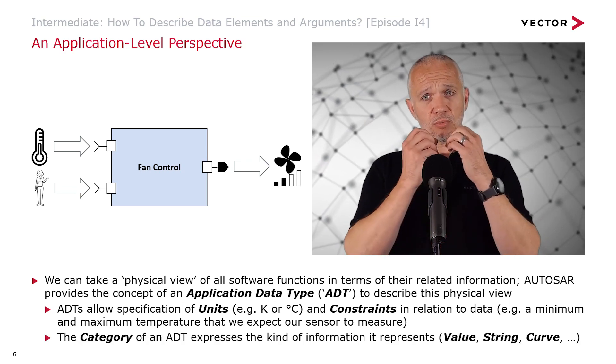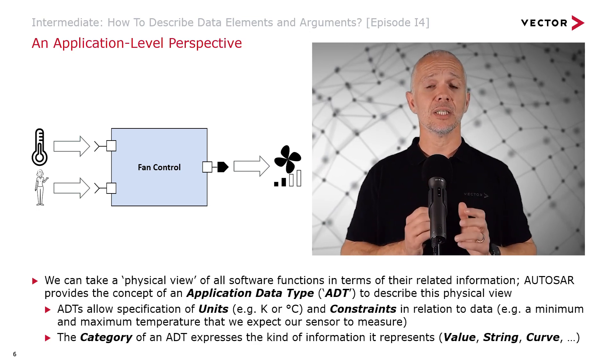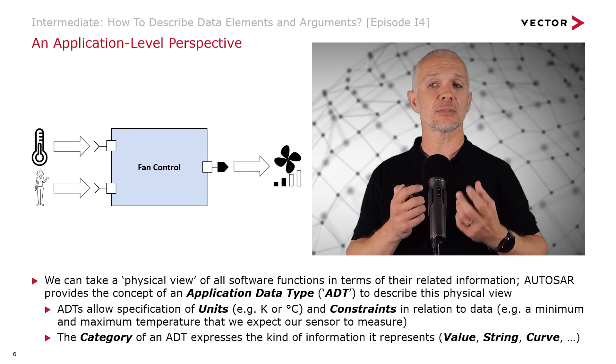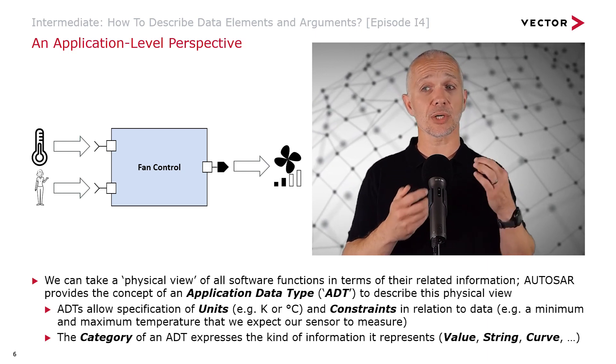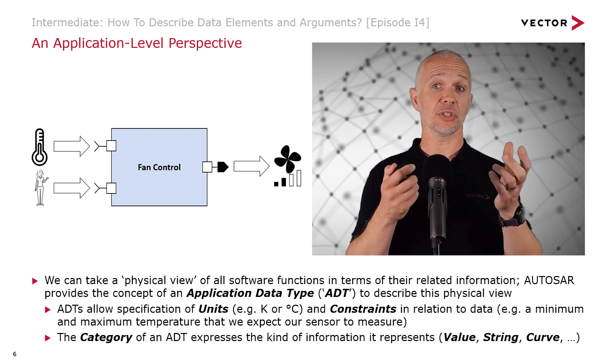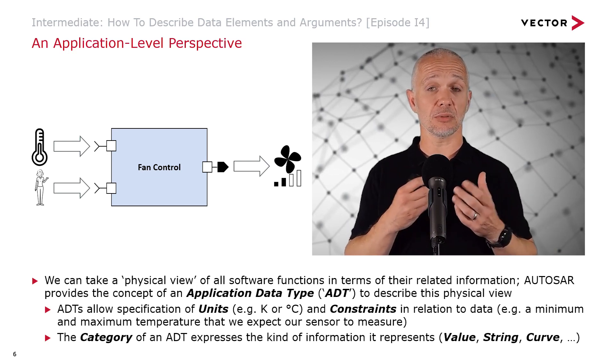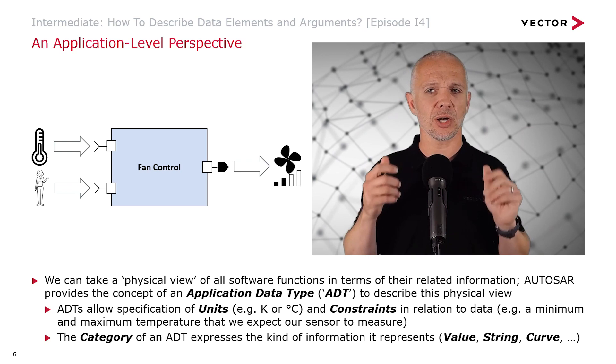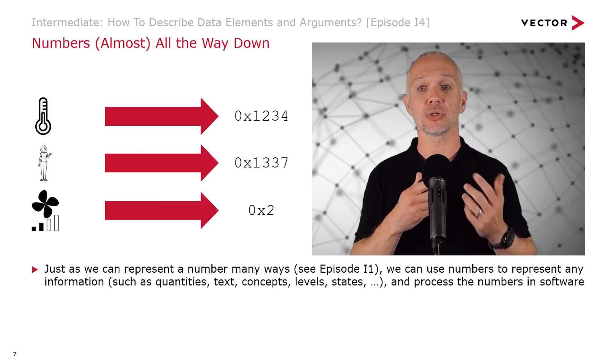We also have the ability with an application data type to have a category that expresses the kind of information it represents: a value, like a temperature; a string, so some text; or something more complex like a curve. And there are other types of ADT, other categories of ADT possible.